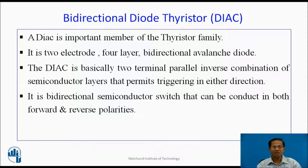Diac — Bidirectional Diode Thyristor. It is also called as a Diac. Diac is an important member of the thyristor family. It is a two-electrode, four-layer, bidirectional avalanche diode. The Diac is basically a two-terminal parallel inverse combination of semiconductor layers that permits triggering in either direction. That is why the Diac is used to trigger bidirectional power devices. It is a bidirectional power semiconductor switch that can conduct in both forward and reverse polarities.